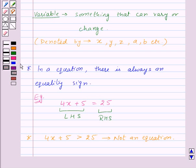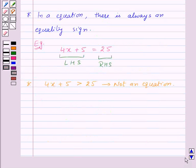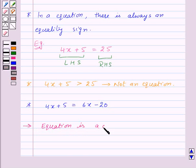Now in an equation, it is not necessary that there is a number on RHS. There can also be an expression like 4x plus 5 is equal to 6x minus 20. That means, an equation is a condition on a variable.